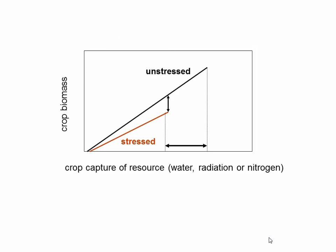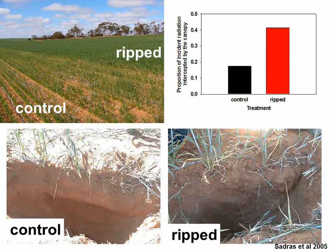Here we are plotting biomass against resources — water, radiation, or nitrogen. A crop that is unstressed will grow in proportion to how much water or nitrogen the crop is capturing. If the crop is stressed, two things happen. First, a smaller canopy captures less water, nitrogen, and radiation. Second, the slope — the efficiency in use of those resources — might drop if the stress is extreme. But of the two effects, the reduction in capture is the more important.